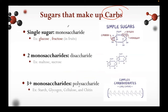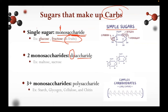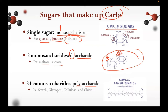The sugars that make up carbohydrates are classified as follows. Monosaccharides are single sugars — 'mono' meaning single, 'saccharide' meaning sugar. Examples include glucose and fructose found in fruits. Disaccharides have two sugars joined — 'di' meaning two — with examples being maltose and sucrose. Polysaccharides have three or more monosaccharides and include starch, glycogen, cellulose, and chitin. These comprise complex carbohydrates with long chains.